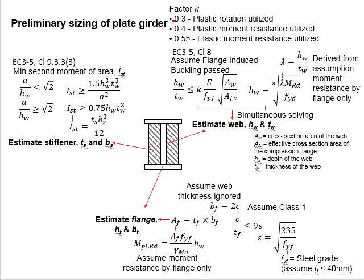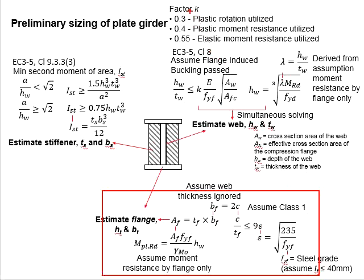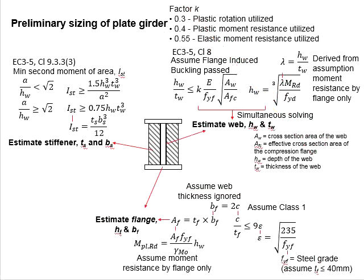When you estimate the size of the web, you assume there is no existence of the stiffener. When you estimate the size of the flange, you assume that the web is not contributing to moment resistance. This assumption should give you a conservative estimation of the size of the member.